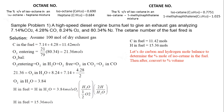Next is to do a carbon and hydrogen mole balance to determine the percent by mole of iso-cetane, and then finally convert to percent by volume using density and molecular weights.